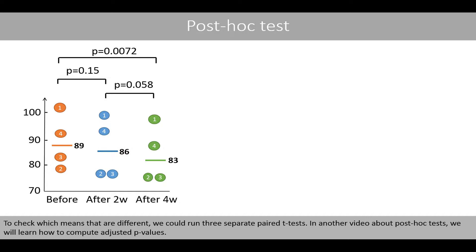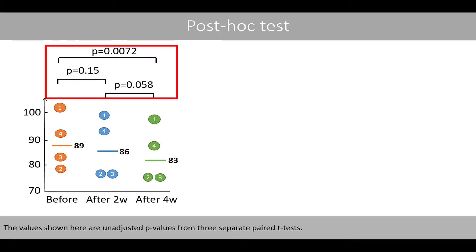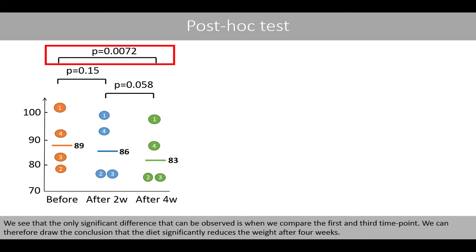To check which means are different, we could run three separate paired t-tests. In another video about post-hoc tests, we will learn how to compute adjusted p-values. The values shown here are unadjusted p-values from three separate paired t-tests. We see that the only significant difference that can be observed is when we compare the first and the third time point. We can therefore conclude that the diet significantly reduces the weight after four weeks.